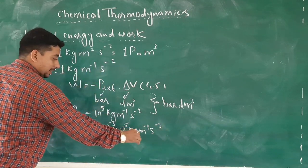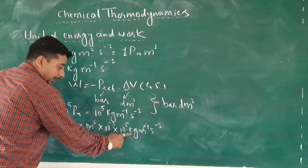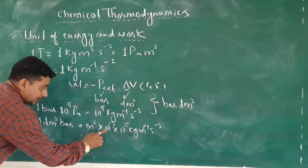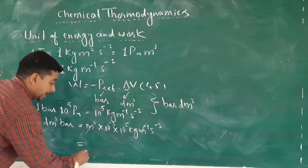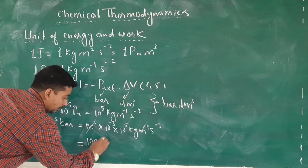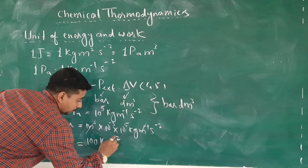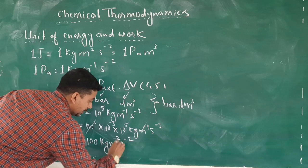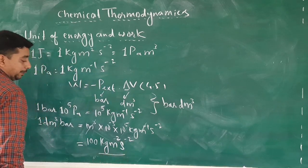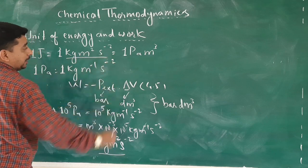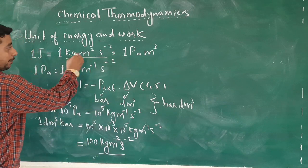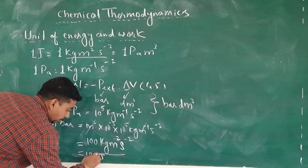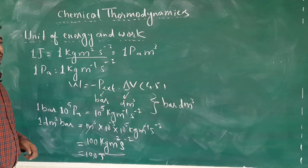Now the meter units cancel, leaving meter squared, along with kilogram and second squared. The factors 10⁻³ and 10⁵ multiply to give 100. So this equals 100 kilogram·meter²·second⁻², and since kilogram·meter²·second⁻² equals 1 joule, we get 1 dm³·bar = 100 joules. So this was about the units of energy and work.